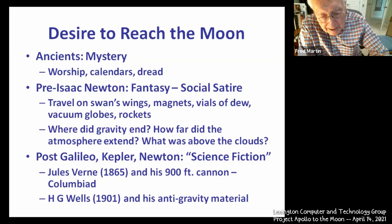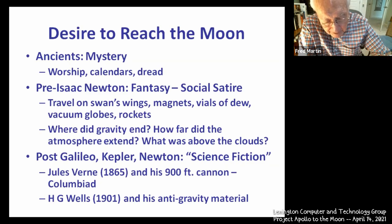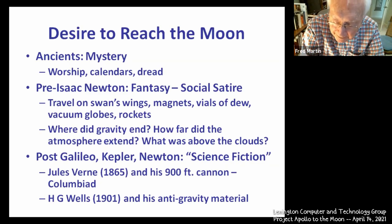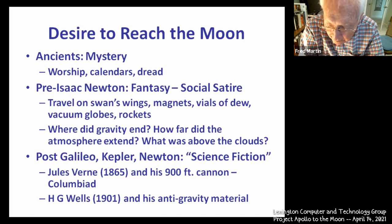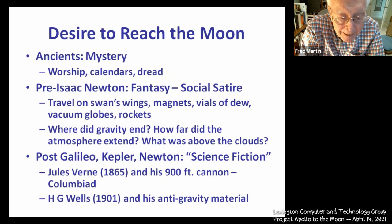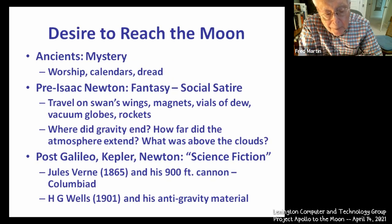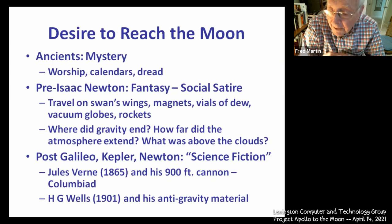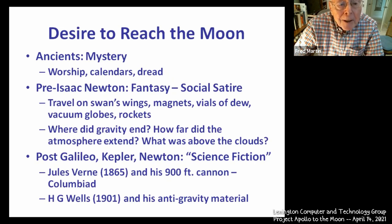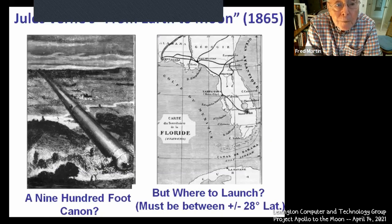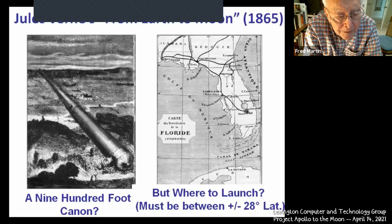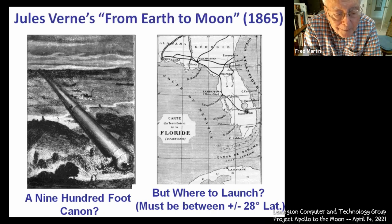HG Wells came a little bit later with a story about anti-gravity material — he could block gravity and have a vehicle fly to the moon by blocking the effect of gravity, then allowing gravity to come on and off in order to steer the vehicle. That was a bit of a fantasy. Jules Verne felt that HG Wells didn't understand science, but HG Wells said that Jules Verne didn't have a sense of humor. Jules Verne's From Earth to Moon in 1865 featured a 900-foot cannon buried in the ground. We'll see a little clip of a movie from 1902 in a moment.